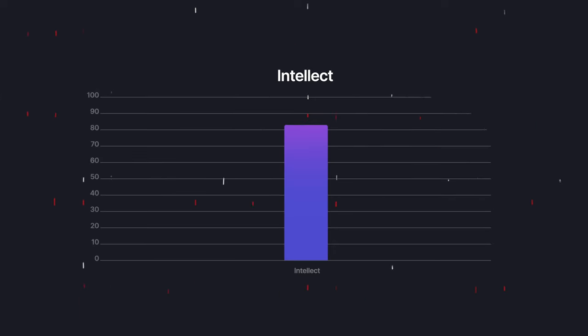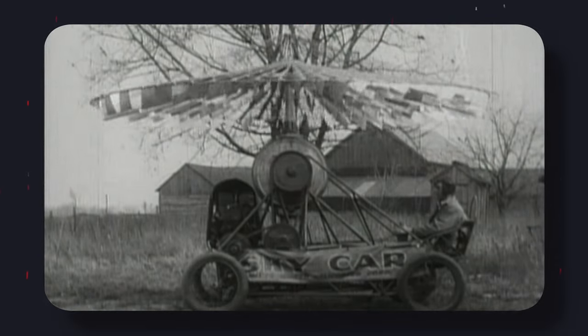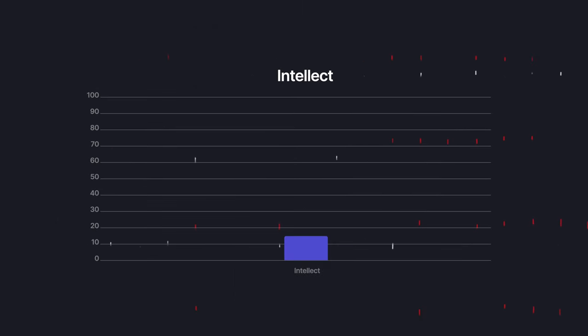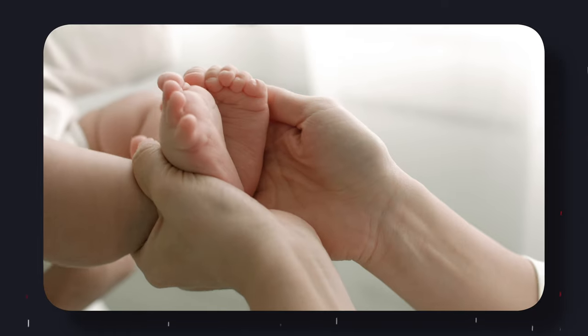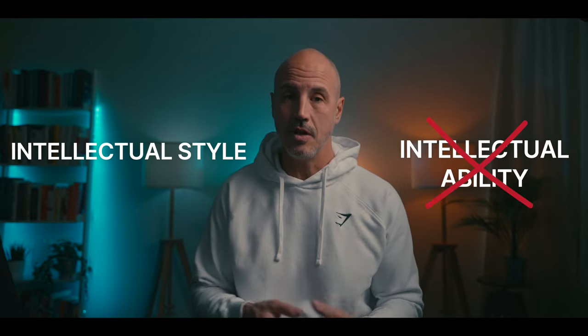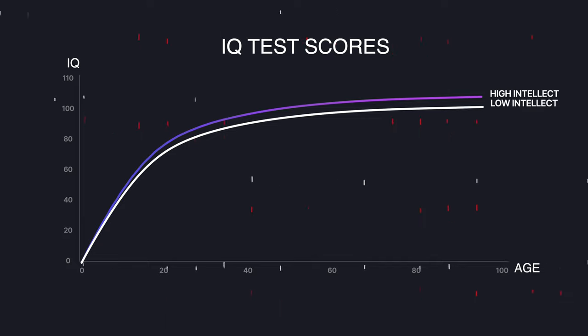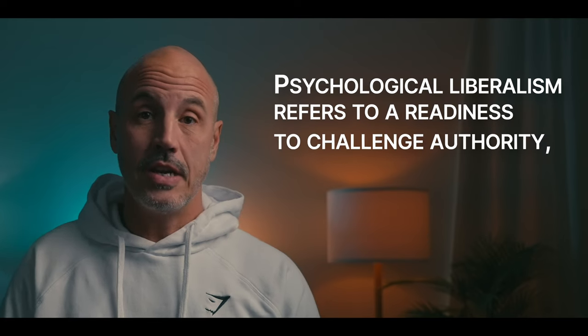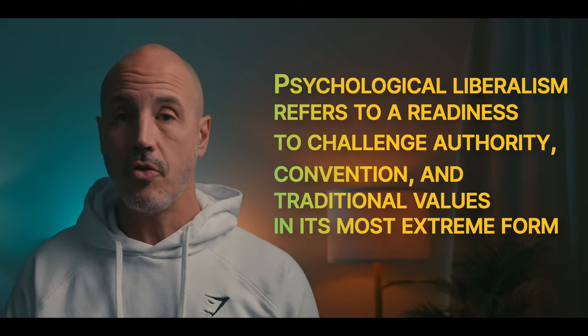High scorers on intellect love to play with ideas — they are open-minded to new and unusual ideas and like to debate intellectual issues. They enjoy riddles, puzzles, and brain teasers. Low in intellect individuals prefer dealing with people or things rather than ideas and regard intellectual exercise as a waste of time. Importantly, intellect should not be equated with intelligence — intellect is an intellectual style, not an intellectual ability. High intellect scorers score only slightly higher than low intellect individuals on IQ tests.